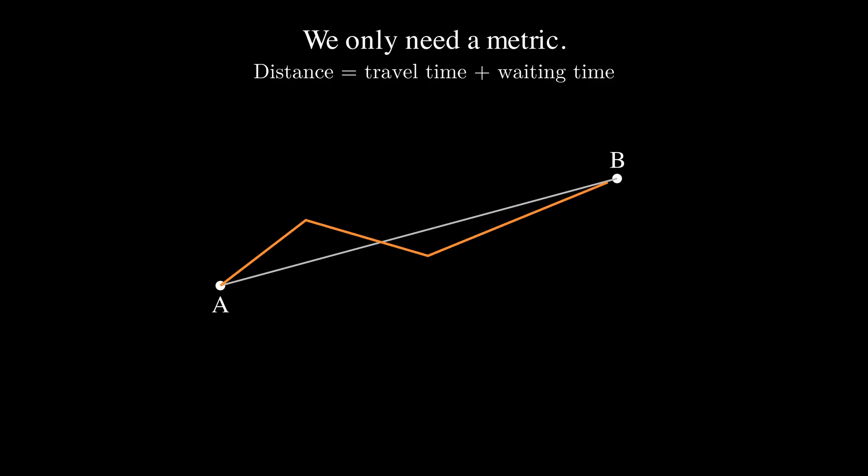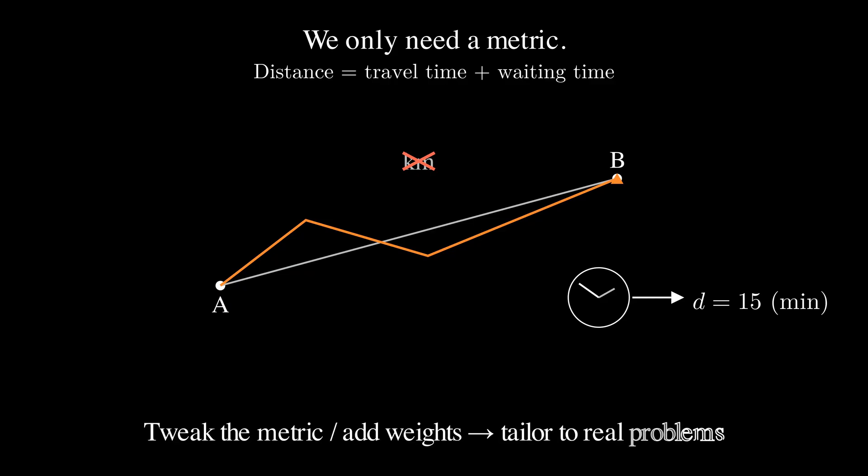What's powerful here is that we only need to be in a metric space, some space where we can measure distances. That means we don't have to use ordinary geographical distance. In the polling site study, for example, the distance between two sites was defined as the expected time it takes to travel between them, plus the waiting time once you arrive. This is much more realistic than just measuring kilometers on a map. So Čech and Vietoris-Rips complexes give us a way to turn raw data into a combinatorial object, a simplicial complex. And by tweaking the metric, we can tailor this construction to the real-world problem we care about.